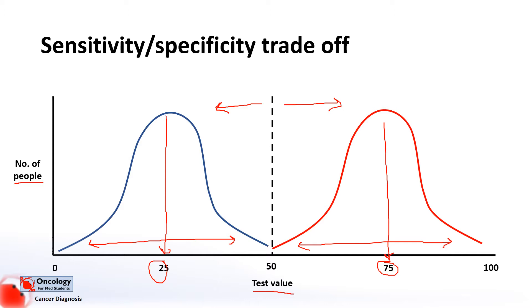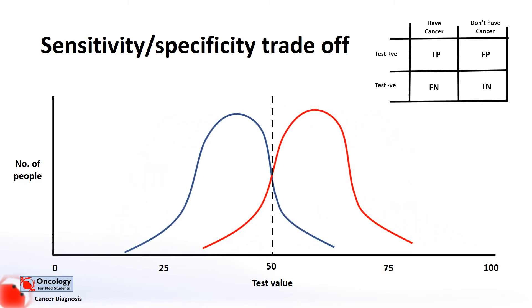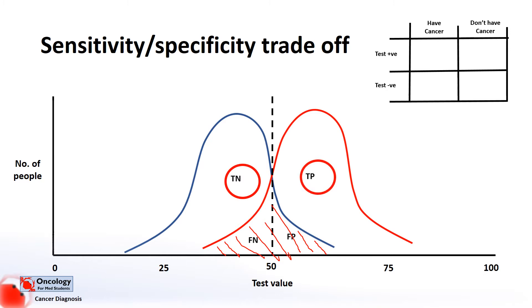But there is no such thing as a perfect test. In real life, the graph is going to look much more like this — there is an overlap between the two groups. This overlap represents a group of people who will have similar test results but may or may not have the disease; in other words, the test will not be able to distinguish between these people. We can relate each area of the graph to the table from the previous video. This region represents people who don't have the disease and test negative — true negatives. This area represents people who have the disease and test positive — true positives. Here we have people who have the disease and test negative — false negatives. And finally, people without the disease who test positive — false positives.